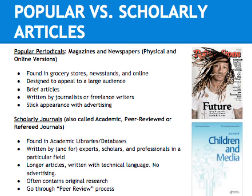For your presentation assignment, it's important to keep in mind that you are not looking for popular articles. What you're looking for is scholarly articles. On the right is an example of a physical scholarly journal, the Journal of Children and Media. Scholarly journals are also referred to as academic, peer-reviewed, or refereed journals. These are found in academic libraries, such as the Rio Hondo College Library, or in library databases.